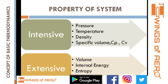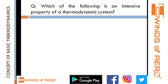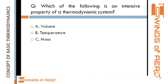Here is a practice question: Which of the following is an intensive property of a thermodynamic system? Options: volume, temperature, mass, or energy. Since intensive properties are independent of mass, we can eliminate mass and energy — internal energy is an extensive property. Volume also depends on mass. Therefore, the answer is B — temperature is an intensive property.